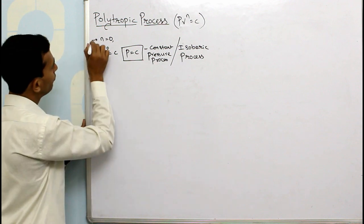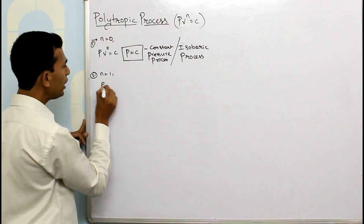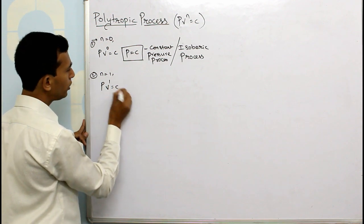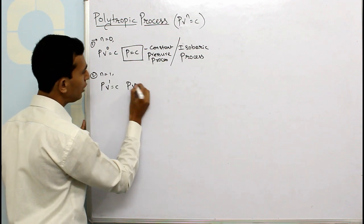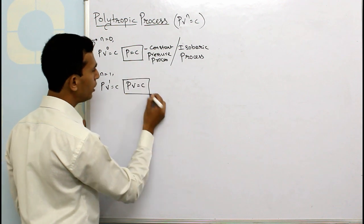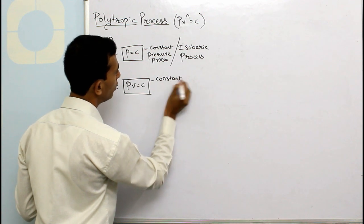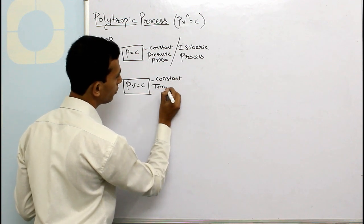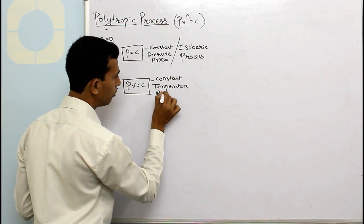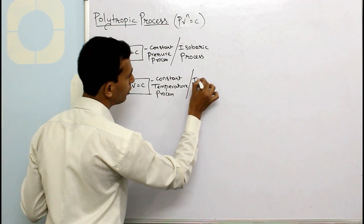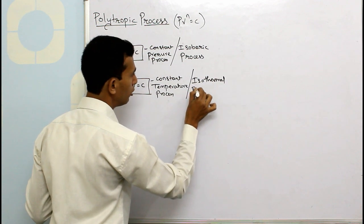Second, if I put n equals to 1, then PV raised to 1 equals to C. Anything raised to 1 is just the base itself, so we have PV equals to C. This equation is used for the constant temperature process, which is also called as the isothermal process.